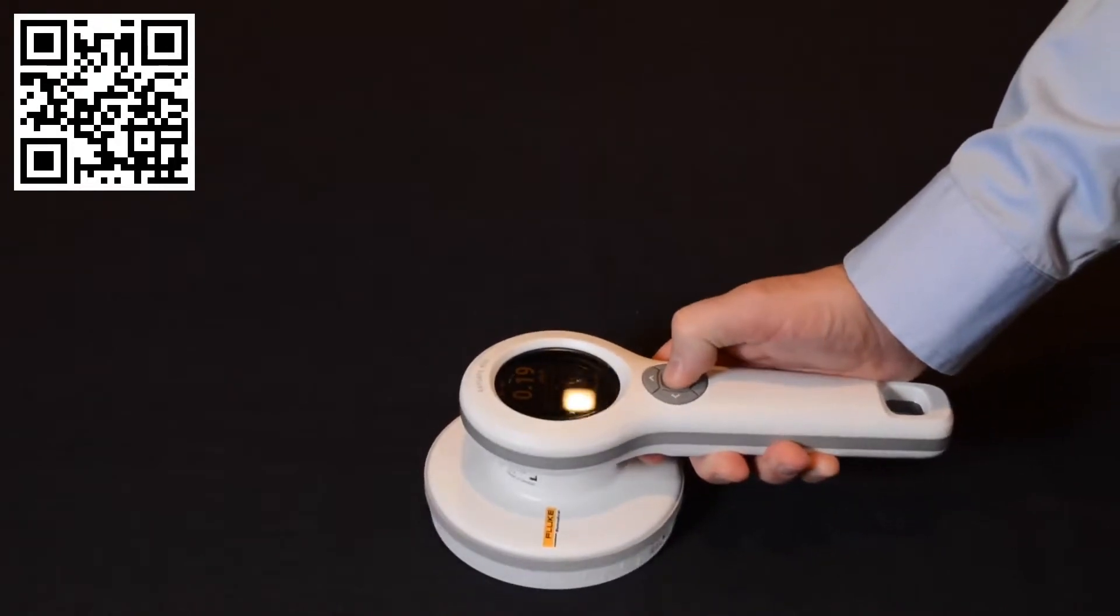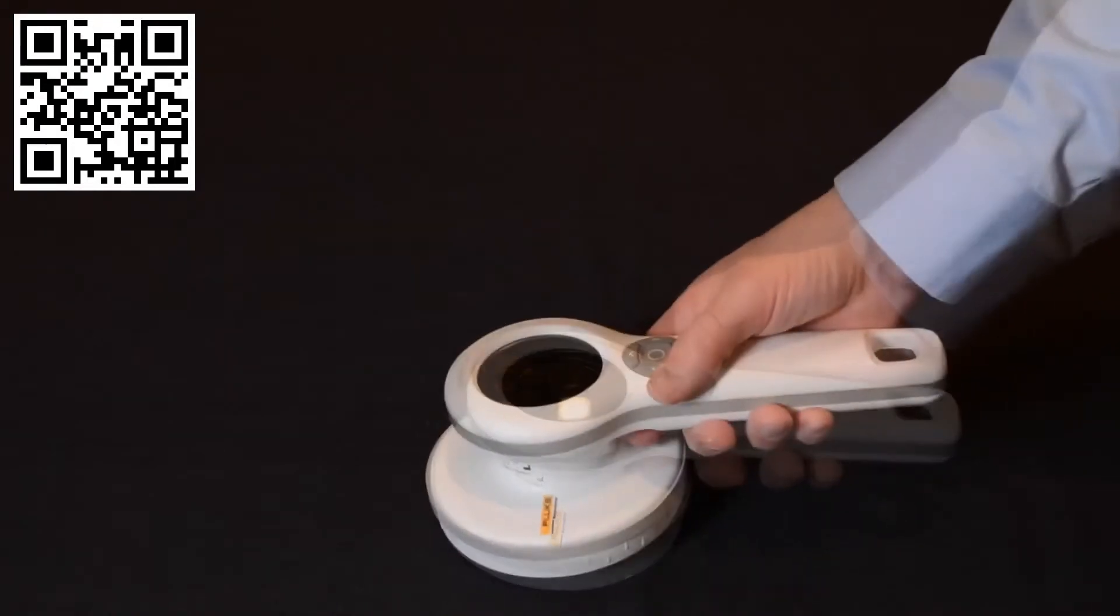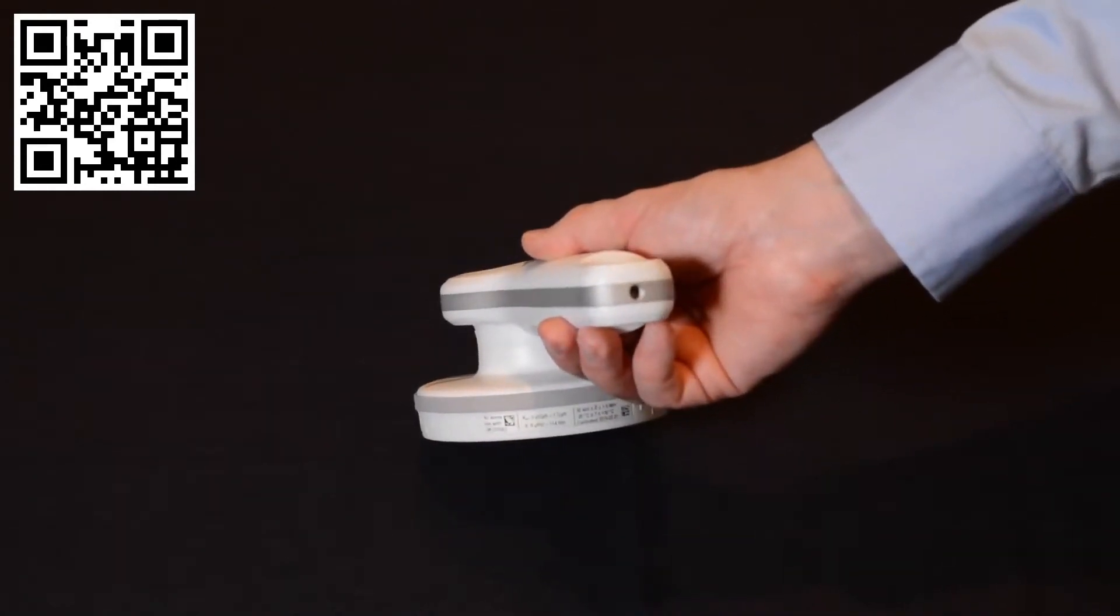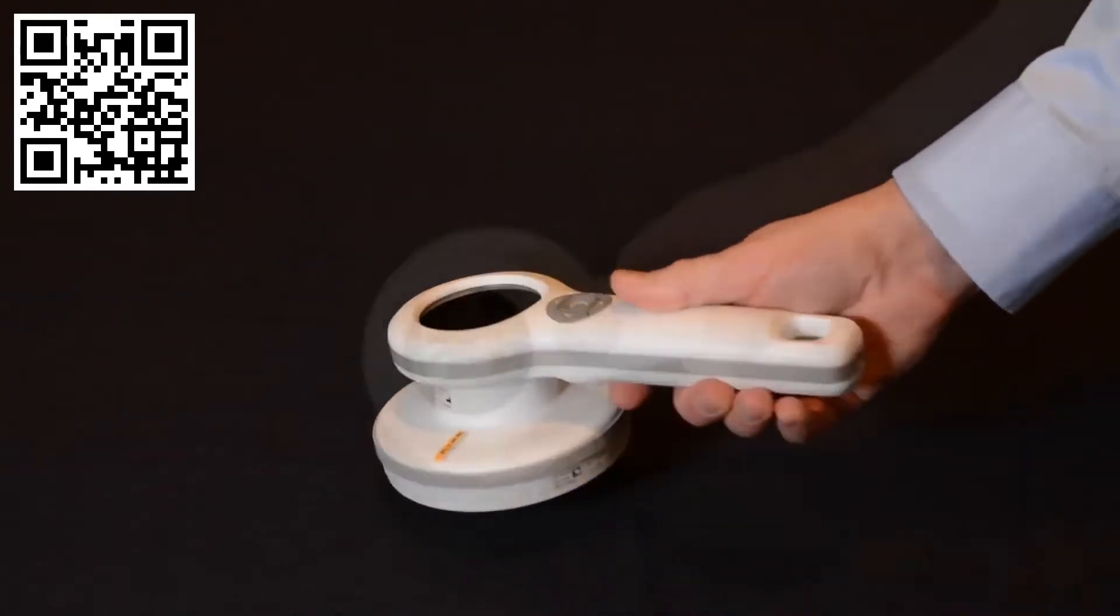The buttons are within easy reach of your thumb when holding the device. You can add a shoulder arm or wrist strap for easy carrying. There is a threading at the end of the device, so you can place the meter on a camera tripod.